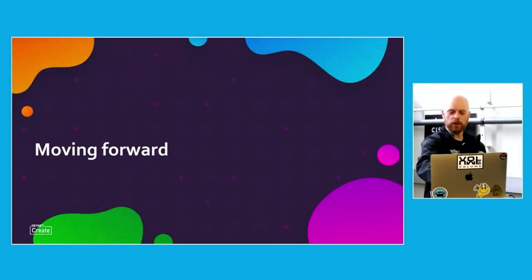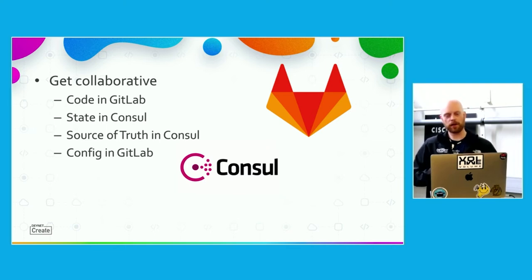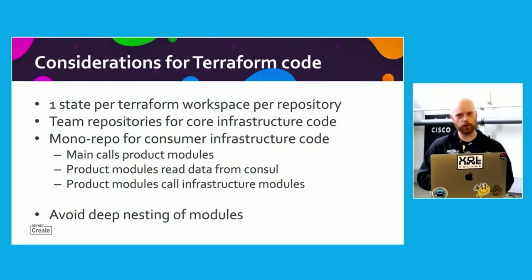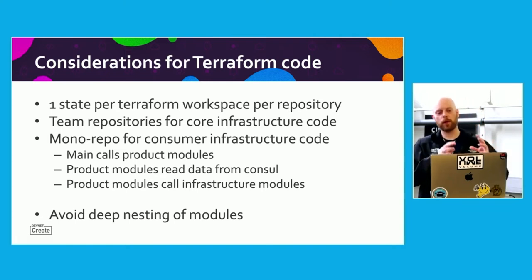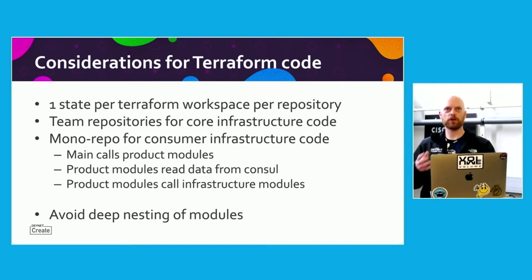Moving forward from building up your modules and products is getting collaborative. That's where we introduce the two main tools we use: GitLab CI for pipelining abilities — we use the runners registered there to do our CI/CD — and Consul from HashiCorp, where we store our state and use it as a source of truth when we render data in from GitLab. We'll show you how that works during the demo. We recommend using a monorepo for your customer code or logical code. All the Terraform that gets deployed for your customers are things you want to on- and off-board.